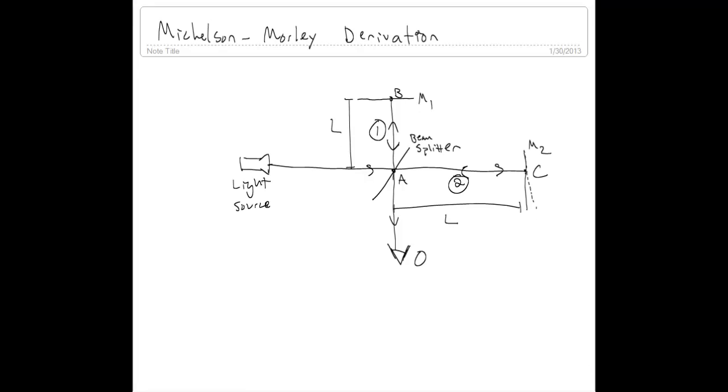Let's talk about the Michelson-Morley experiment in a little bit more detail. So in the Michelson-Morley experiment, we have a light source, and light, like a laser, comes out of the light source and reflects off of a beam splitter.